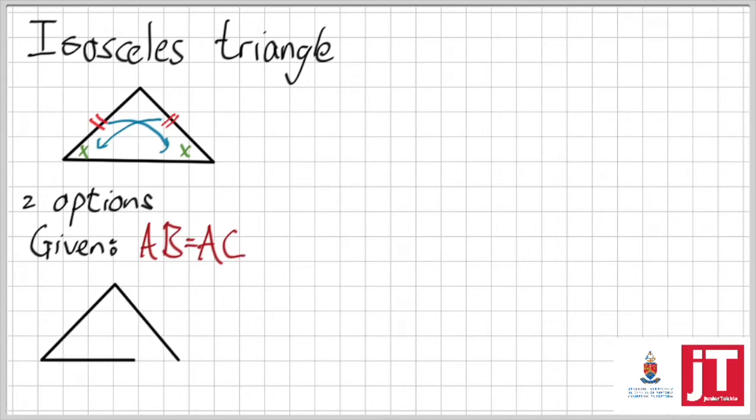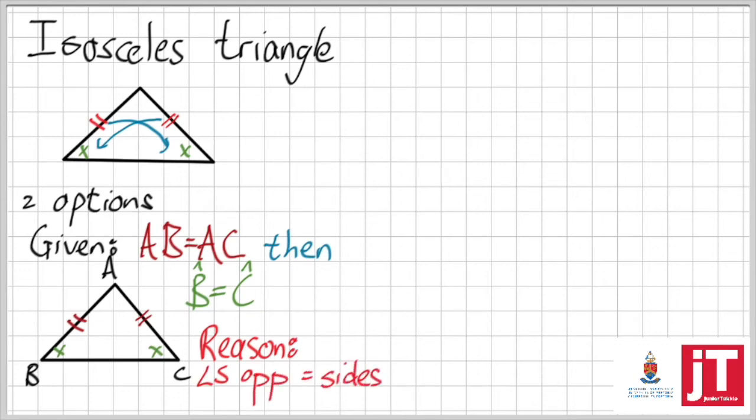I've got two options. Either I am given that the sides are equal. So, AB is equal to AC. What's then going to happen? Well, then angle B and angle C is going to be the same. But you just said that. I know, but look at the order in which it is given. First, I'm given that AB is equal to AC and therefore, angle B and angle C is the same. What reason are we going to give the examiner? Why is angle B and angle C the same? Because it is angles that are opposite equal sides.